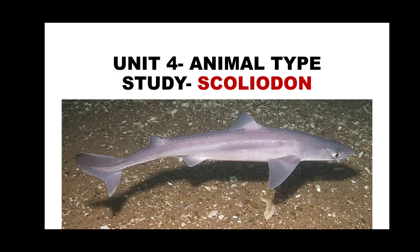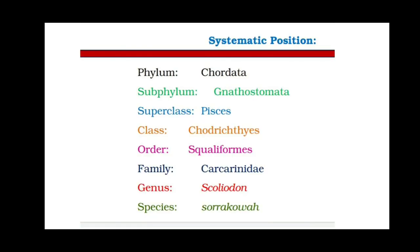The systematic position of Scoliodon: Kingdom Animalia, Phylum Chordata, Subphylum Gnathostomata, Superclass Pisces, Class Chondrichthyes, Order Squaliformes, Family Carcharhinidae, Genus Scoliodon, Species sorrakowah.